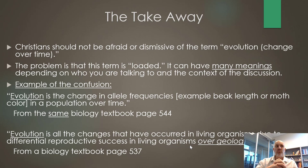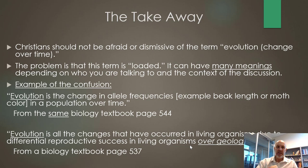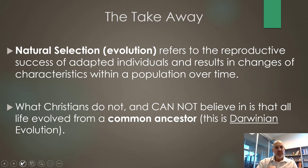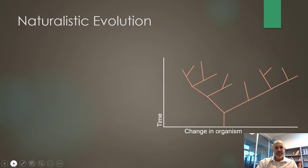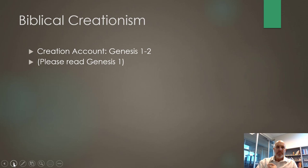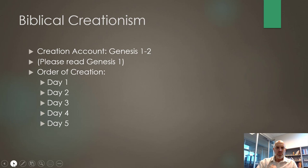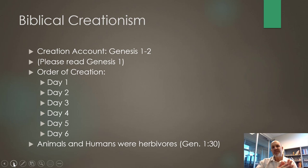We can't dismiss the term evolution per se, because it just means change over time. What we don't want to believe in is Darwinian evolution — we need to make that distinction. So I want you to stop the video and read Genesis chapter 1, writing out in order the main events of each day, days 1 through 6.